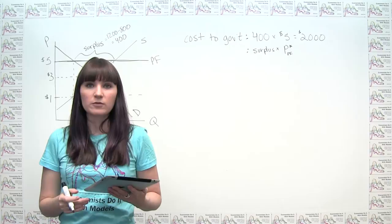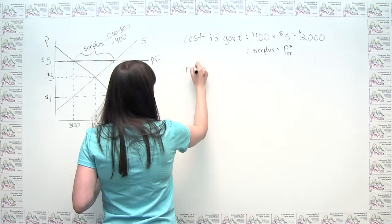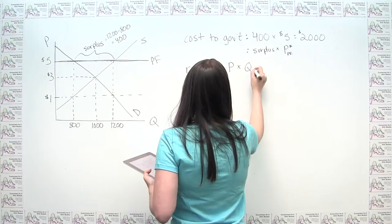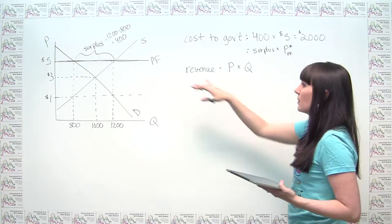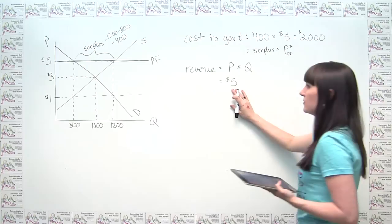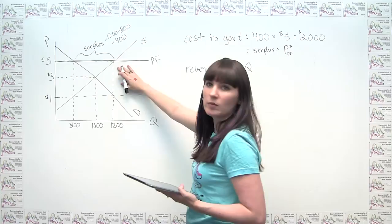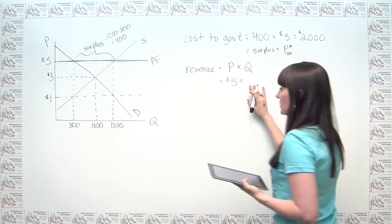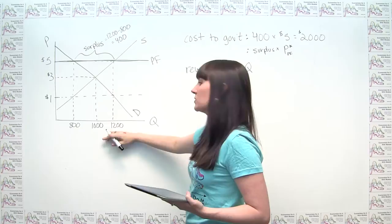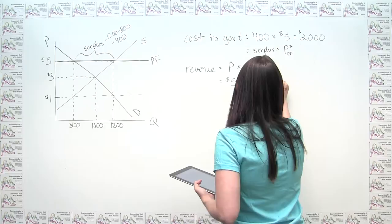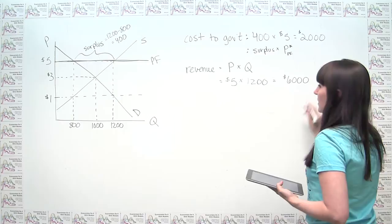The last part of Part A asks how much revenue do corn farmers receive. Revenue equals price times quantity. Here we're selling at $5, and producers are actually able to sell all 1,200 bushels of corn — just not all to consumers. So the revenue is $5 times 1,200, which is $6,000 for corn producers.